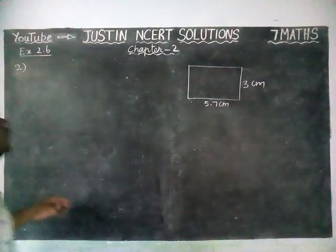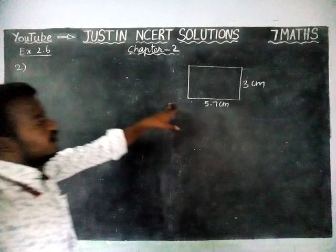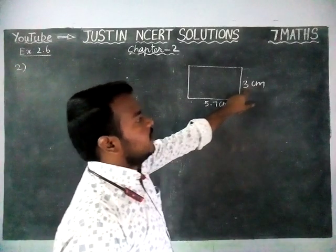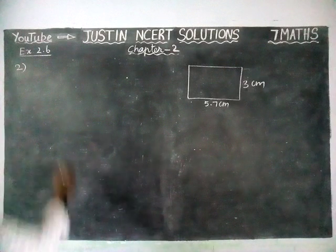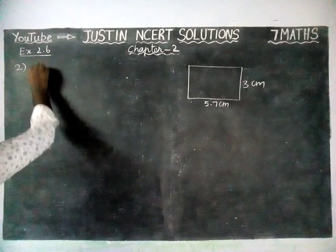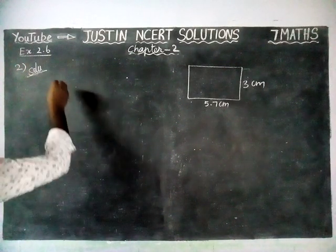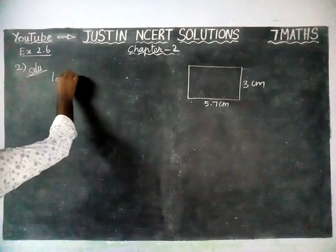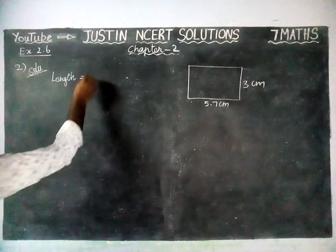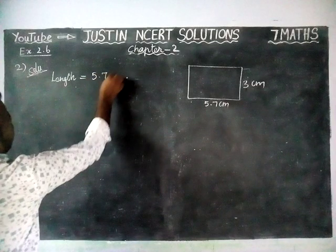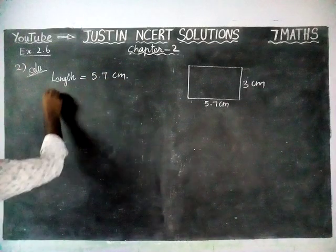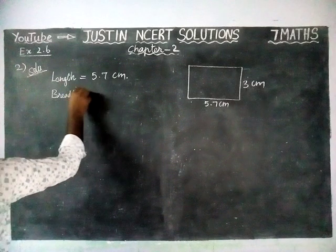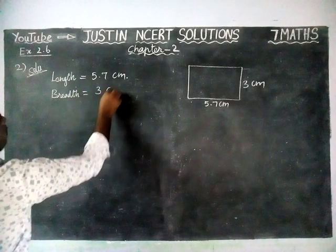Here, we are given a rectangle of length 5.7 cm and breadth 3 cm. We have to find the area of a rectangle. First, we are going to write the given values: length is equal to 5.7 cm and breadth is equal to 3 cm.